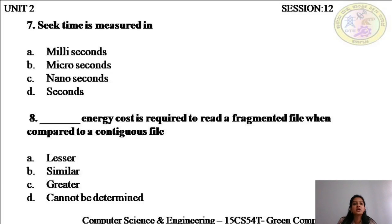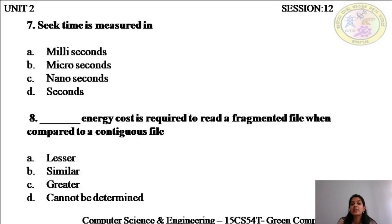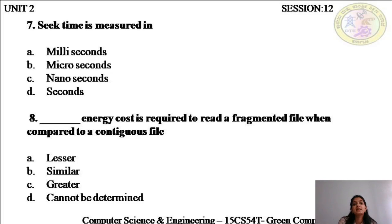The eighth question: what energy cost is required to read a fragmented file when compared to a contiguous file? Fragmented files are files that are divided into bits and pieces and scattered all across your hard disk. So it definitely takes more energy or power to read fragmented files rather than unfragmented files. Unfragmented files are those stored in contiguous memory locations in your hard disk. Greater energy cost is required to read a fragmented file when compared to a contiguous file — so C is the answer. If your application is making use of fragmented files, it is best practice to first defragment them, which results in lower processor utilization and greater energy efficiency.